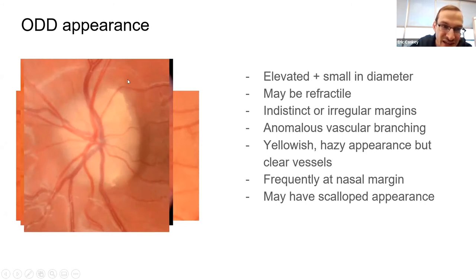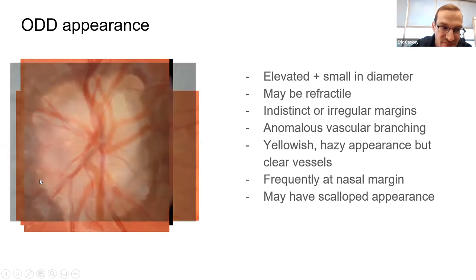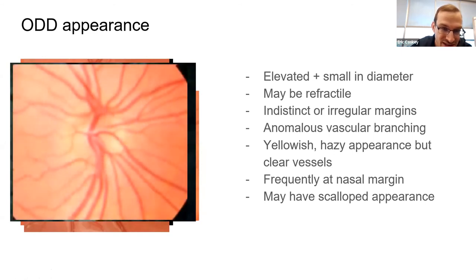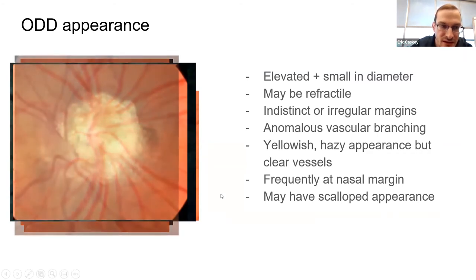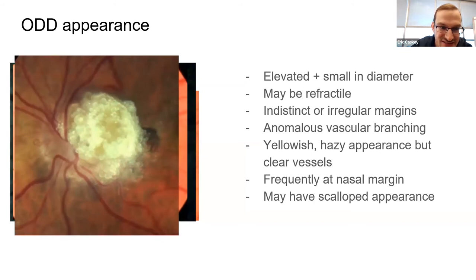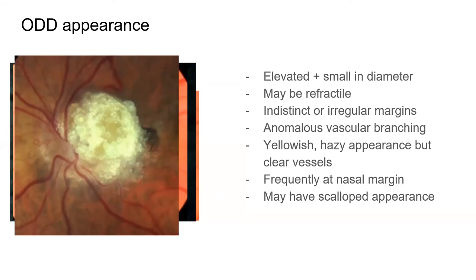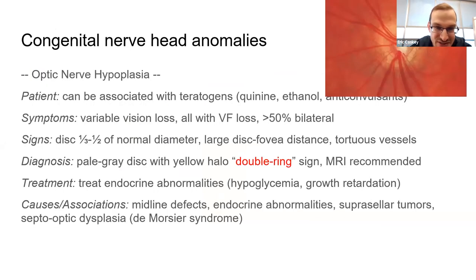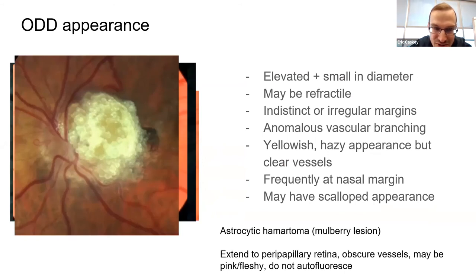With dramatic drusen cases, look for anomalous vascular branching. If you see a mulberry lesion — that's an astrocytic hamartoma — think of phacomatosis; this can be associated with tuberous sclerosis. They love to ask about phacomatoses.